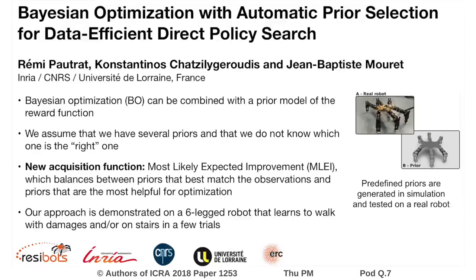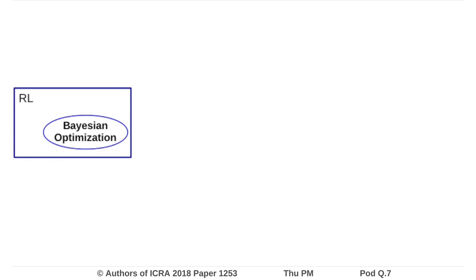Bayesian optimization with automatic prior selection for data-efficient direct policy search. Among the data-efficient approaches for reinforcement learning, Bayesian optimization can successfully learn parametrized policies in only a few iterations.